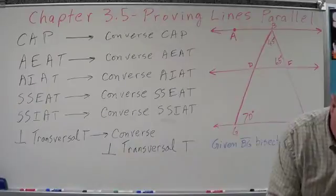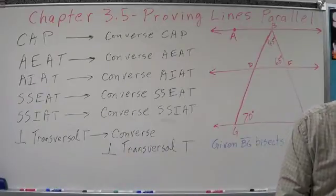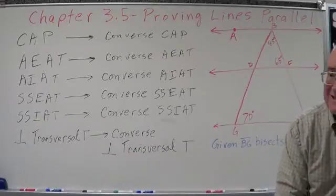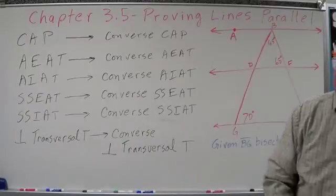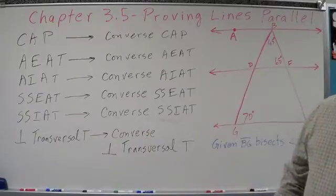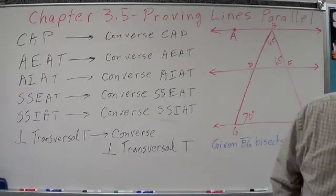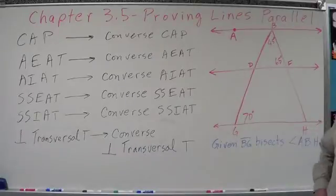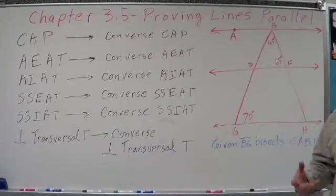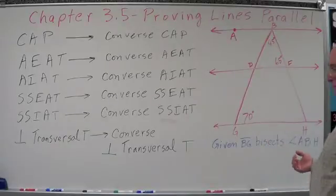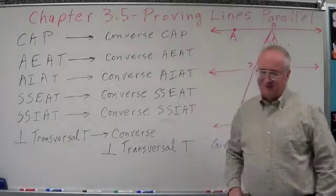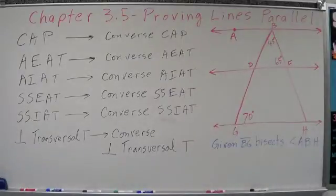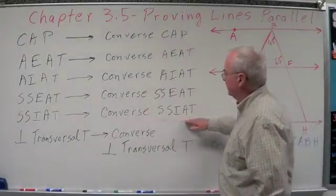The perpendicular transversal theorem simply says: in a plane, if a line is perpendicular to one of two parallel lines, it is perpendicular to both of them. So if we have parallel lines and a line is perpendicular to one of them, it's perpendicular to both. The converse says if two lines are perpendicular to the same line, then they are parallel. So basically these converses are ways for us to prove that lines are parallel — they set up the relationships between angles so we can prove lines are parallel.